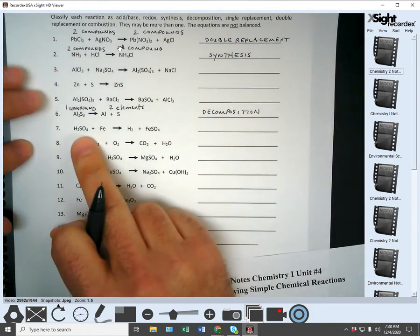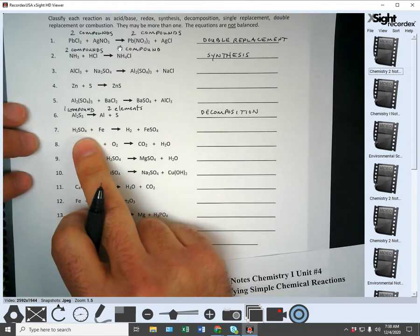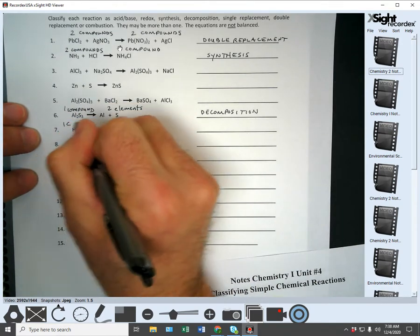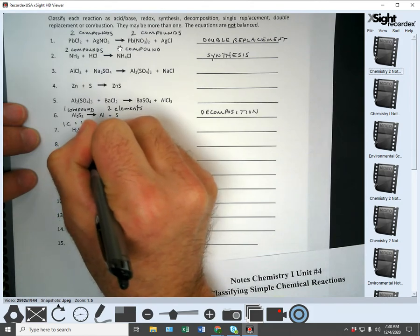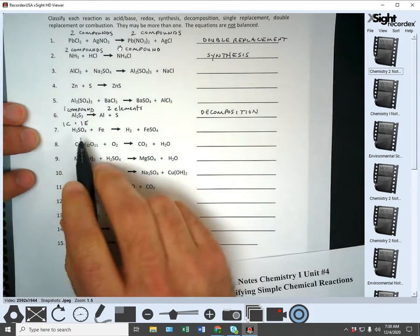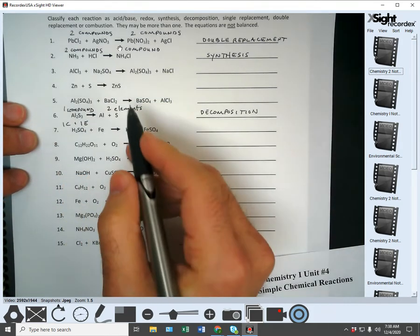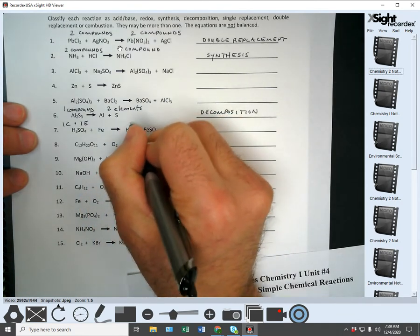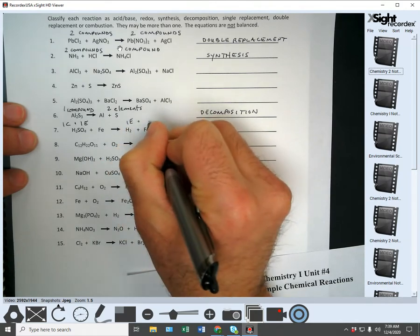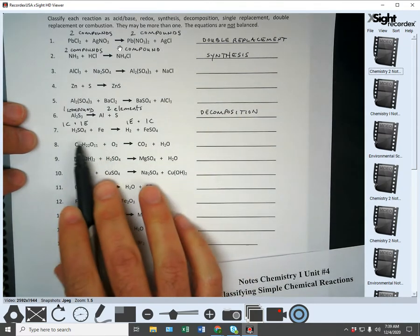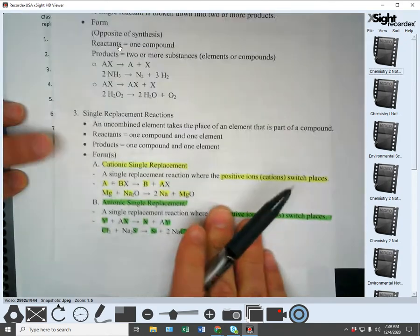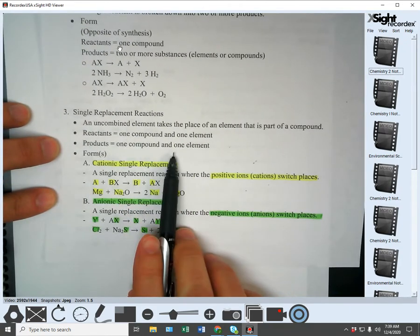All right. Now let's take a look at seven. We've got one compound and one element. I'm just going to shorten them to C's and E's. On the product side, we have one element and one compound. So what type of reaction has one element and one compound on both sides?